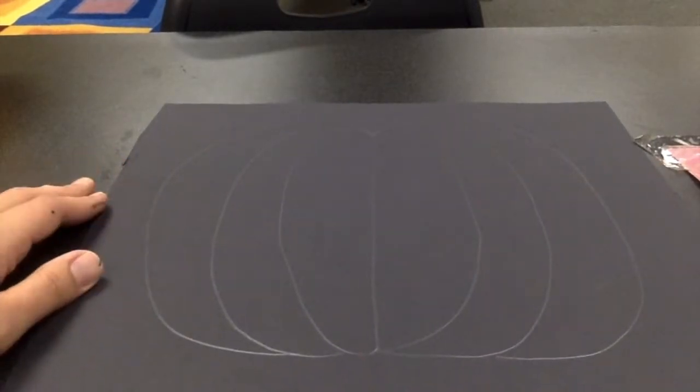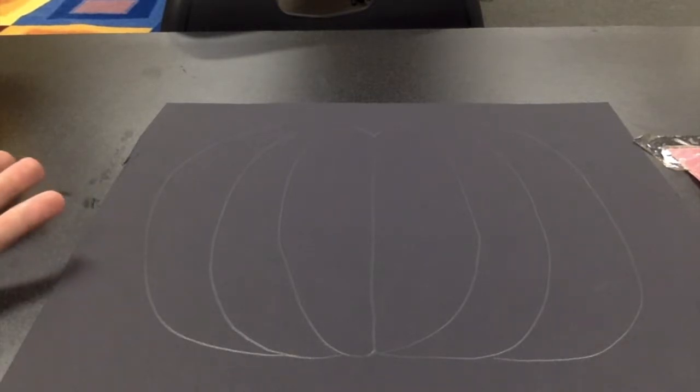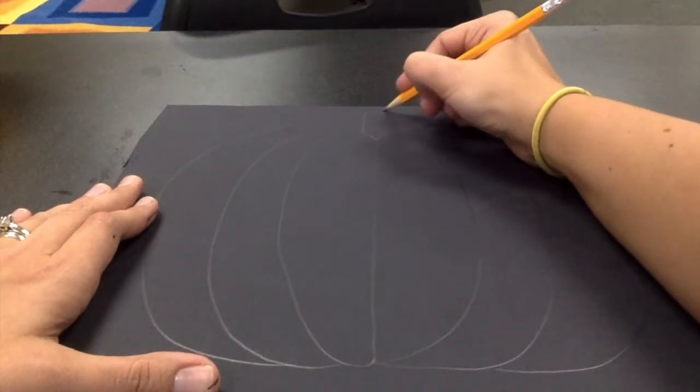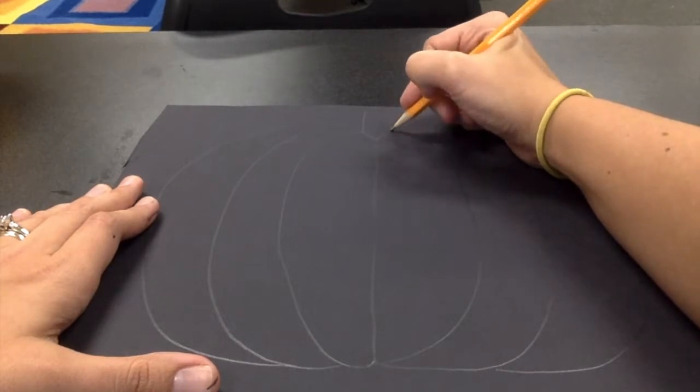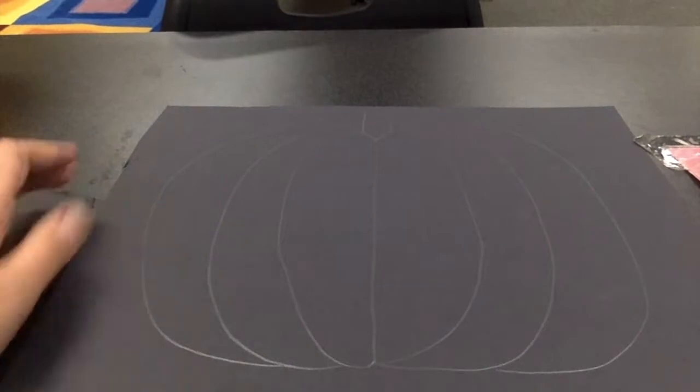Now our pumpkin doesn't have a stem, so I'm just going to draw a rectangle that goes up, across, and down. I don't have to draw the bottom of the rectangle because it just disappears down into the pumpkin.